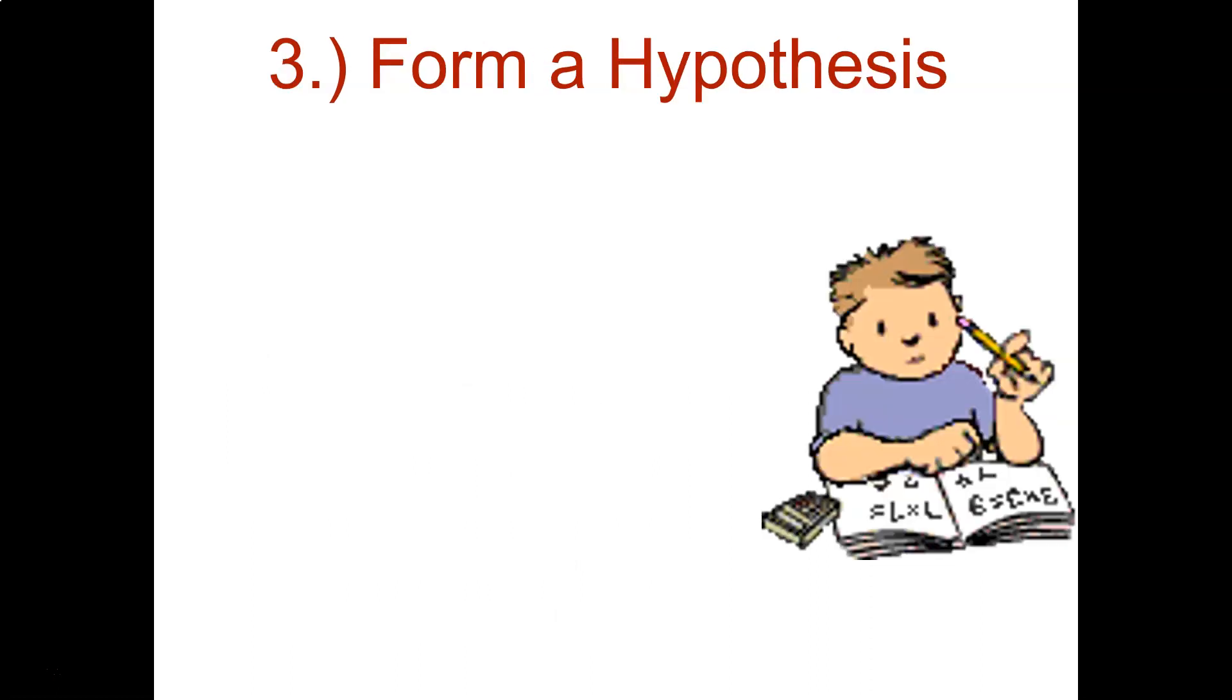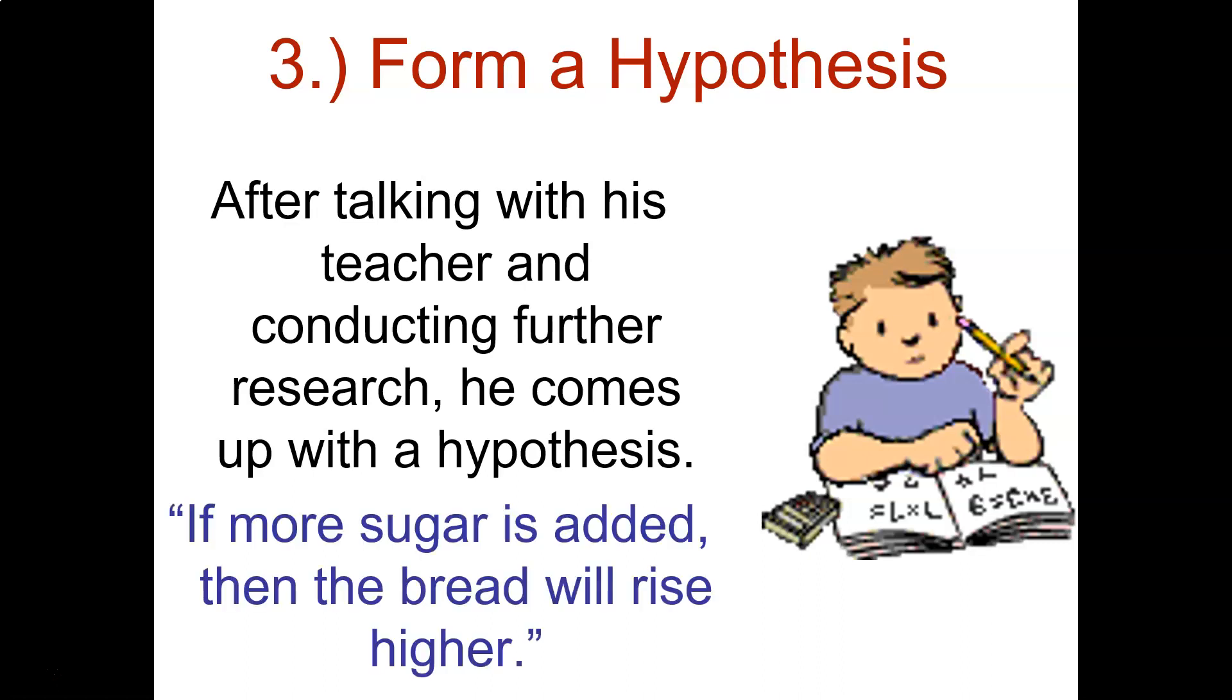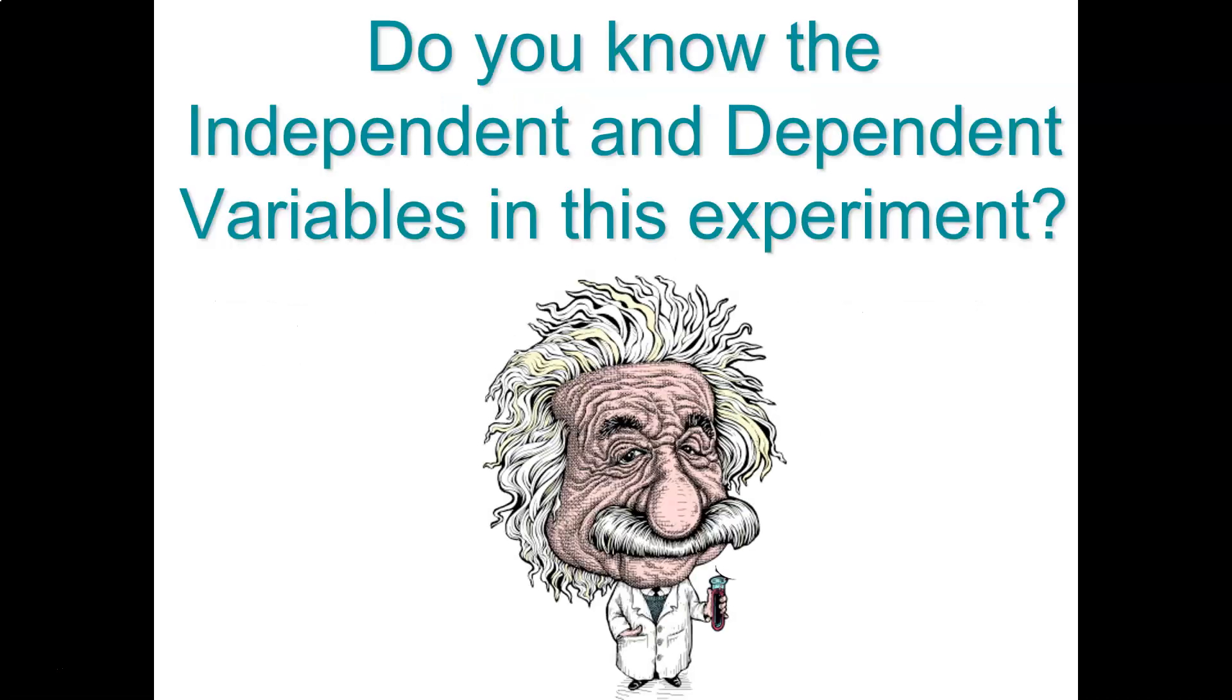That's step three. He did the research and forms a hypothesis. He thinks that if you add more sugar then the bread will rise higher. That makes sense because the yeast feed on the sugar, so the more sugar they have, the more gas they'll produce, and therefore the bigger the loaf of bread will be. A hypothesis is going to mention both the independent and the dependent variable. It's defining a predicted relationship between them. And we'll talk about independent and dependent variables here in just a second.